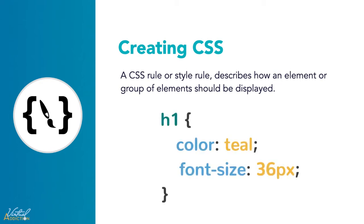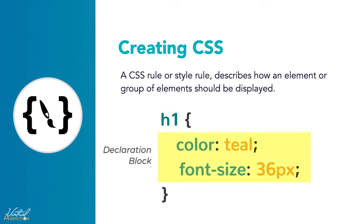Take the following example. The H1 is the selector. Selectors are used to determine which HTML element to apply the styles to. This whole entire snippet — everything within the curly braces — is called the declaration block, and it may include one or more style rules.